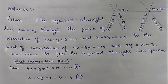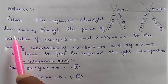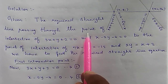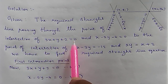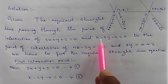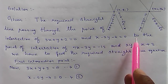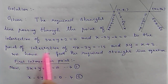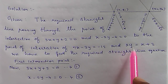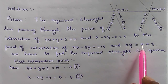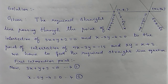Given: the required straight line passes through the point of intersection of 3x + y + 2 = 0 and x − 2y − 4 = 0, to the point of intersection of 7x − 3y = −12 and 2y = x + 3. We need to find the required straight line equation.